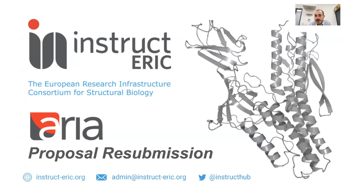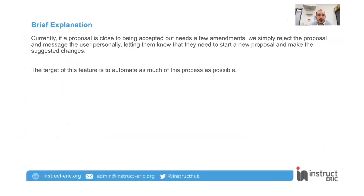The feature is called proposal resubmission. So why are we doing it? Essentially, there were a few cases where a proposal would be close to being approved but would need one or two small changes. In these cases, what we'd do originally is reject the proposal and then send a message to the owner saying you're very close, please make another proposal with these changes. That was quite a lot of faff, and there's quite a lot of that flow which we can automate, which is what this feature is doing.